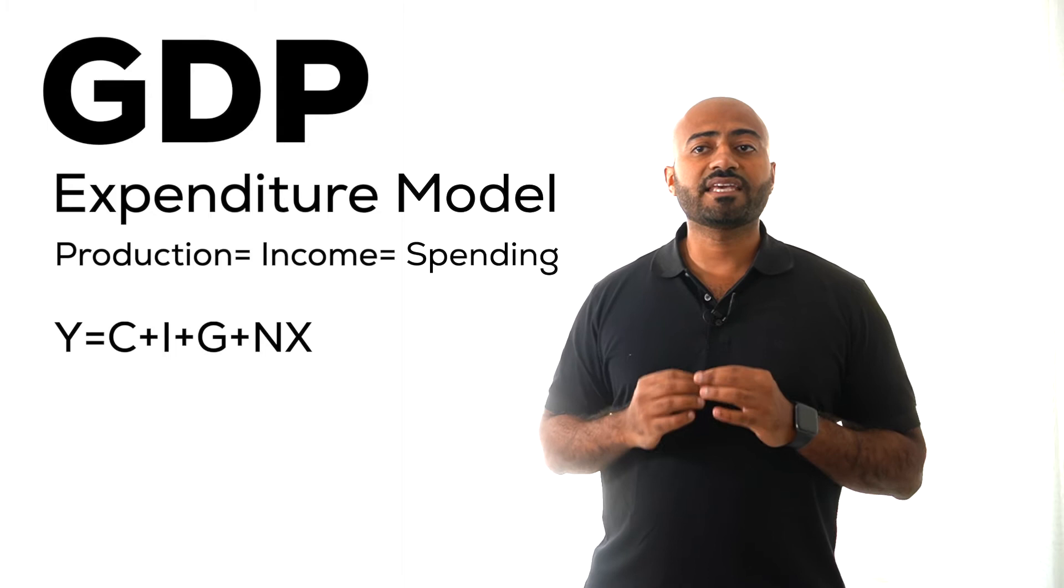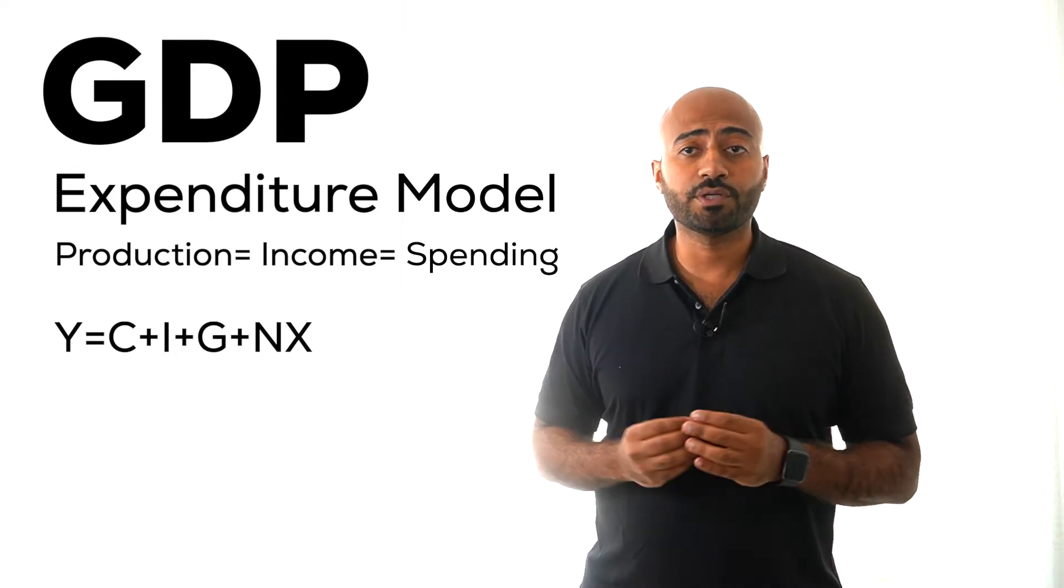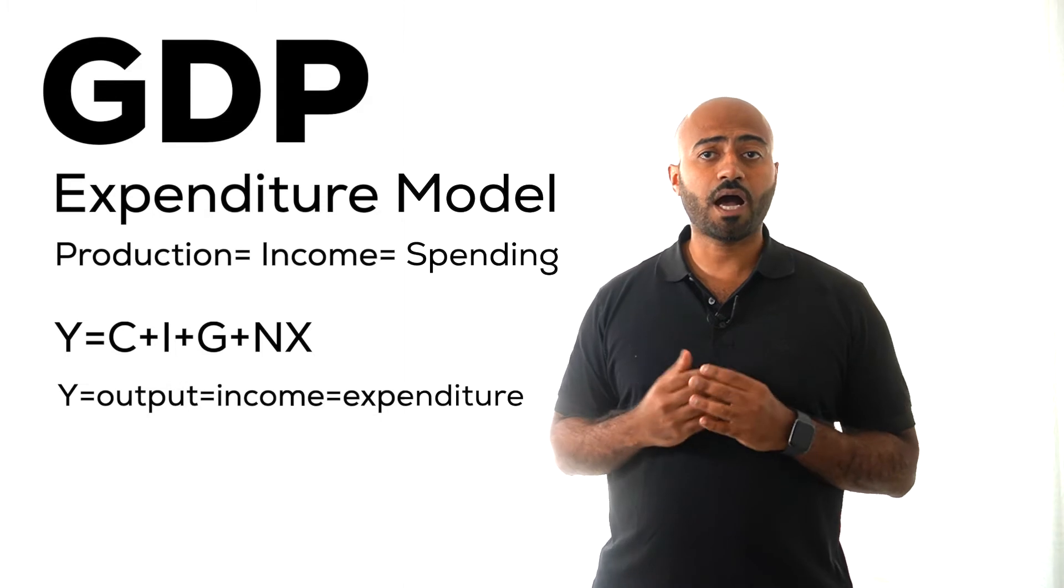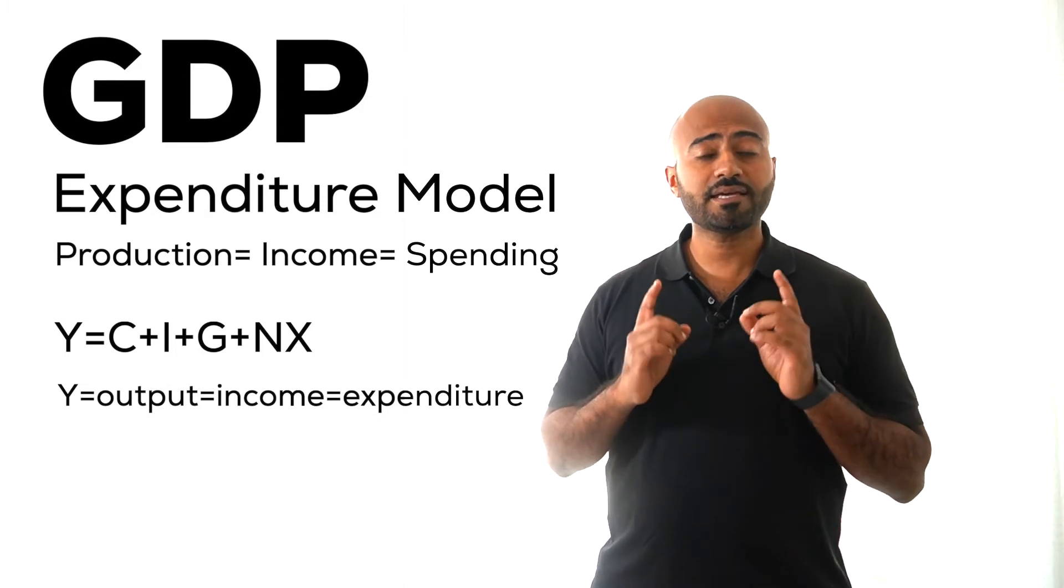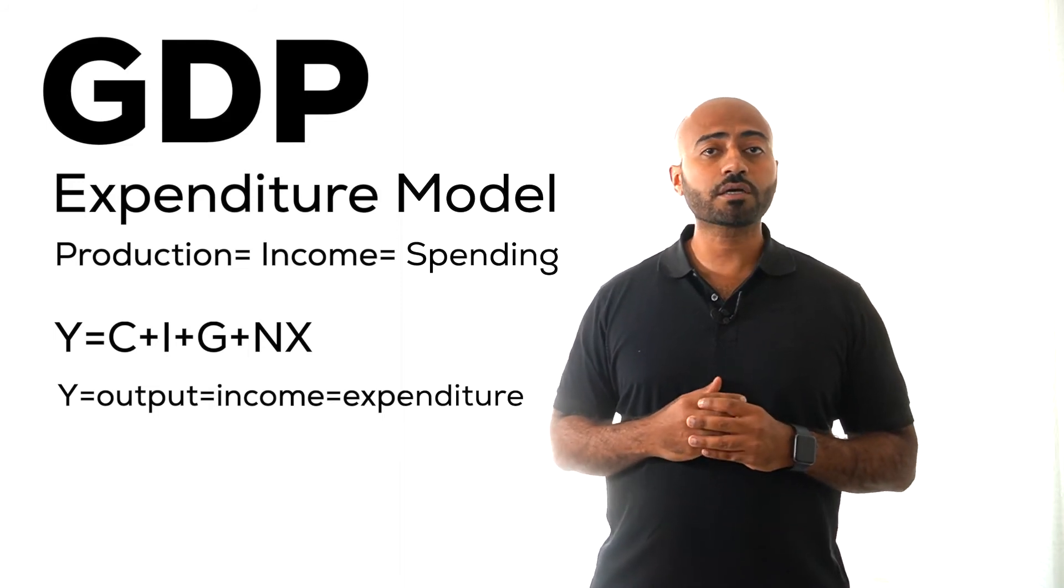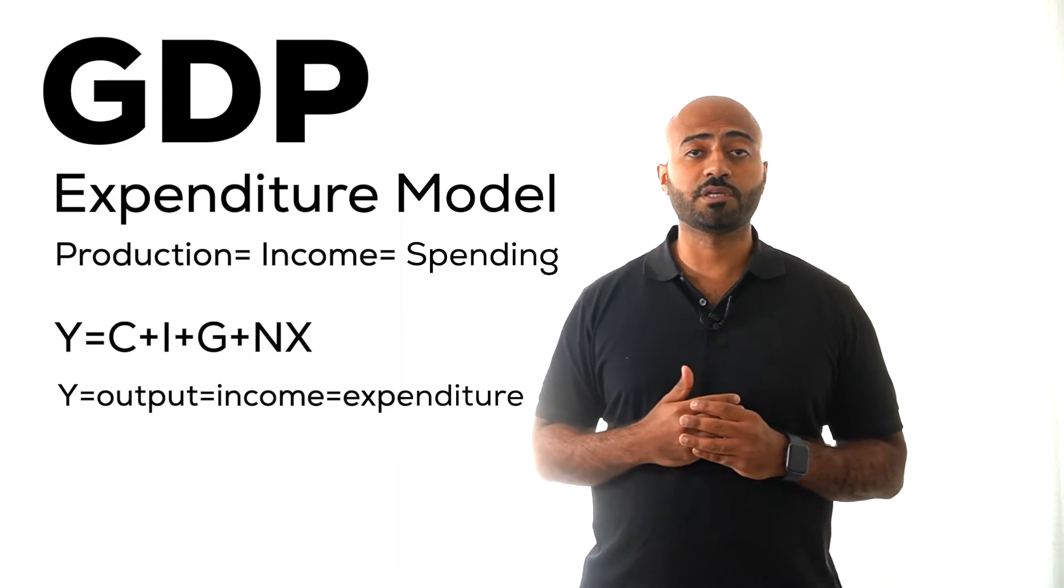This states that the economic output represented by Y is the sum of C, I, G, and NX. Our goal today is to discuss what these expenditure components are and how they contribute to the GDP.